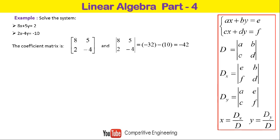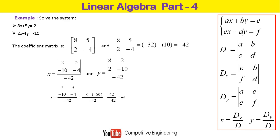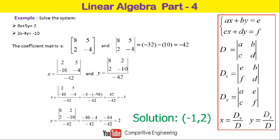For x, we replace the first column with [2; −10], giving det([2 5; −10 −4]). The determinant of this top matrix is 42, and the bottom is −42, so x = 42 / −42 = −1. For y, we replace the second column with [2; −10], giving det([8 2; 2 −10]) = −84 / −42 = 2. So the solution is x = −1 and y = 2.